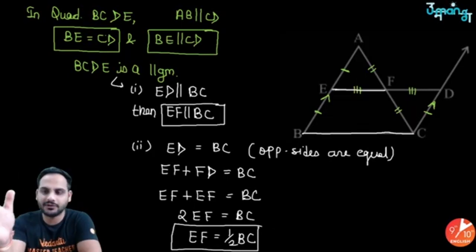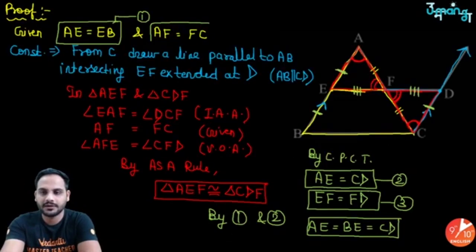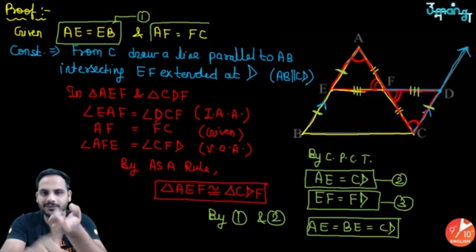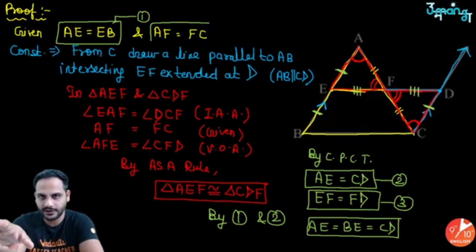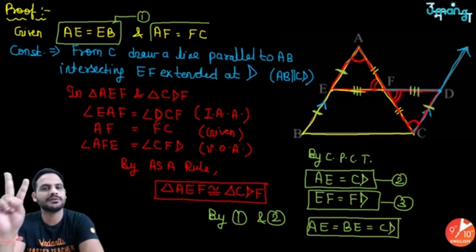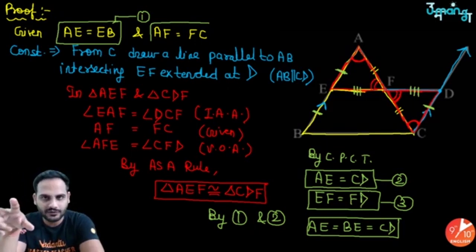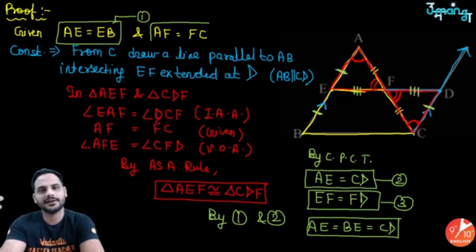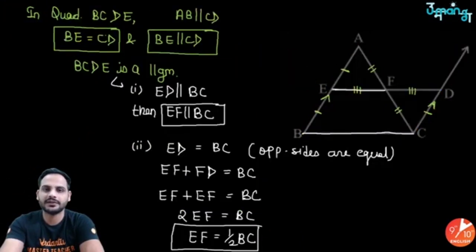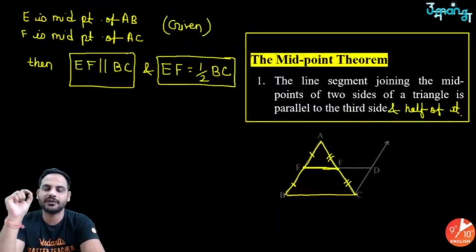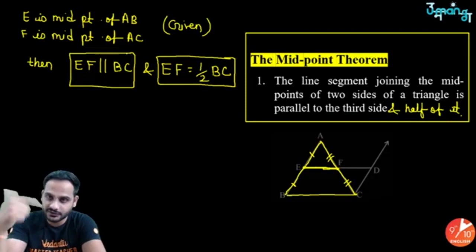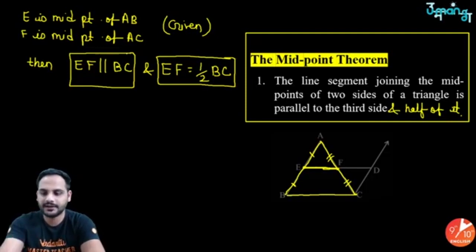To remember the proof: just remember the diagram. First prove the two triangles congruent, then prove the lower quadrilateral as a parallelogram — two steps and you get both results. Practice it well.